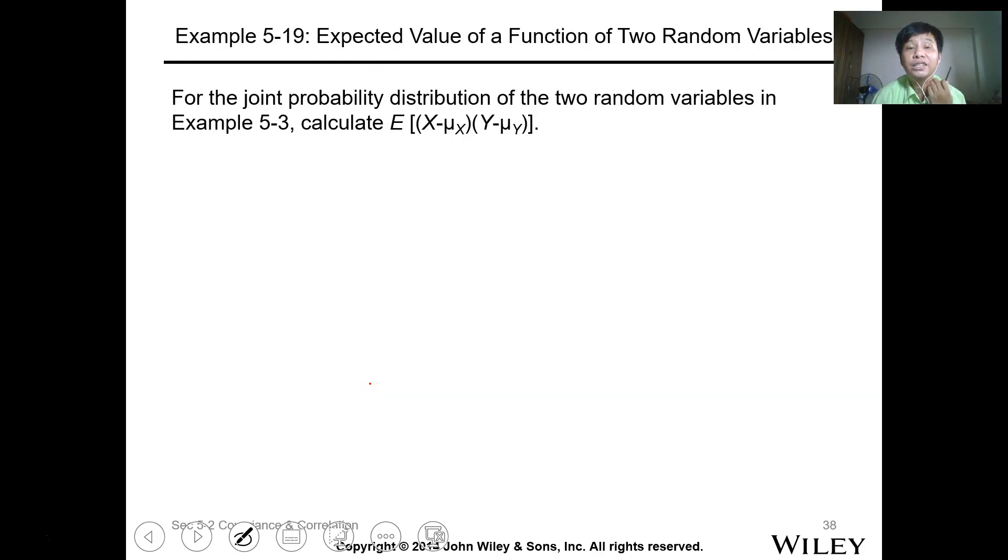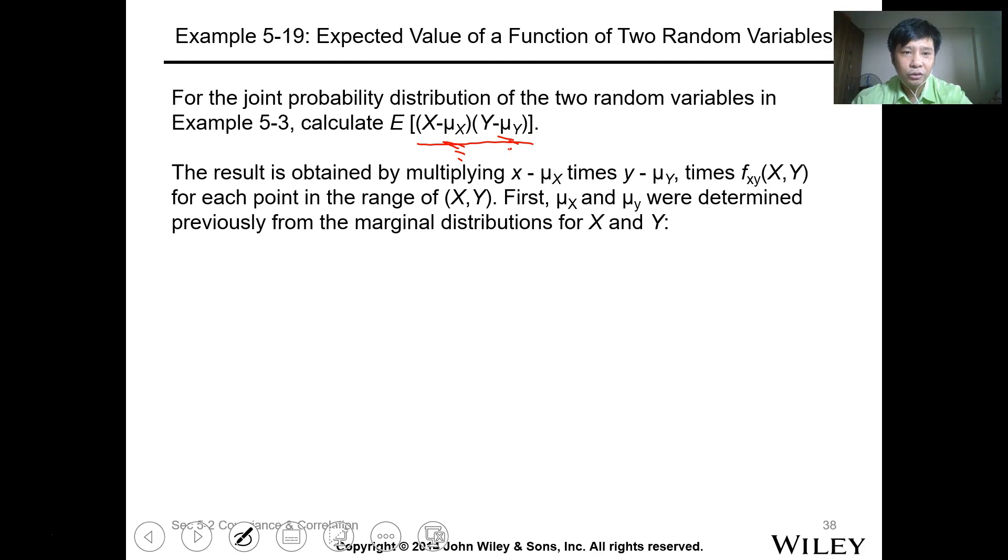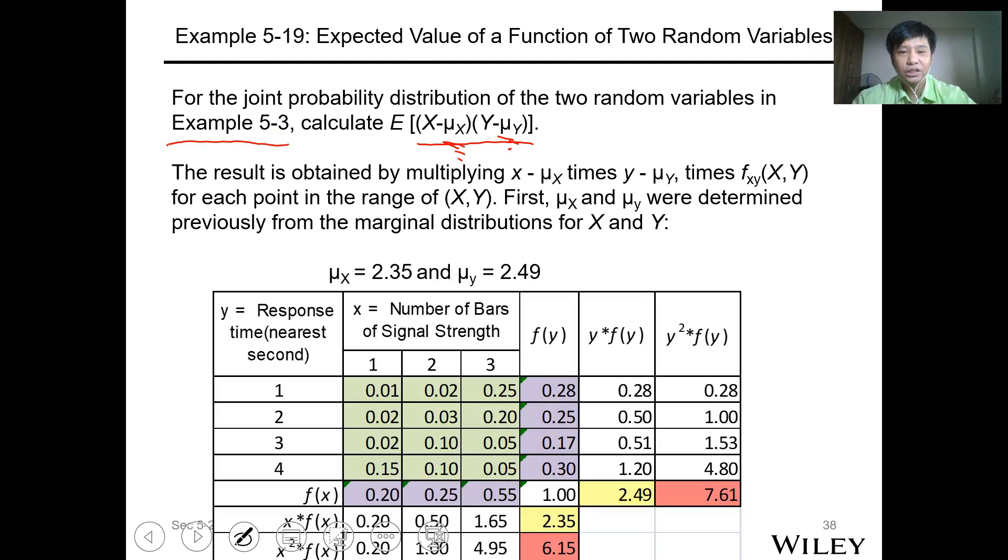Let's define your expected value as the difference of the variable and the marginal mean. This is the mean of X, mean of Y. Take note of Example 5.3 - this is our example about the number of bars of signal and the response time. This is our probability, and this is our mean value.